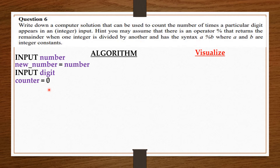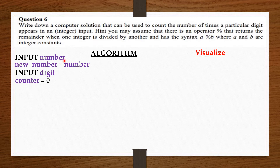The idea we are going to use is that we take the user's number, take the last digit, and compare that last digit to the user's digit. If it is the same, we increase counter by one. Then after that, we remove that last digit. So we get a new last digit and compare that new last digit to the user's digit again. If it is the same, we increase counter by one. If it is not, counter remains as it is. We remove that last digit as well. So we keep doing this until there is no longer any digit to compare.